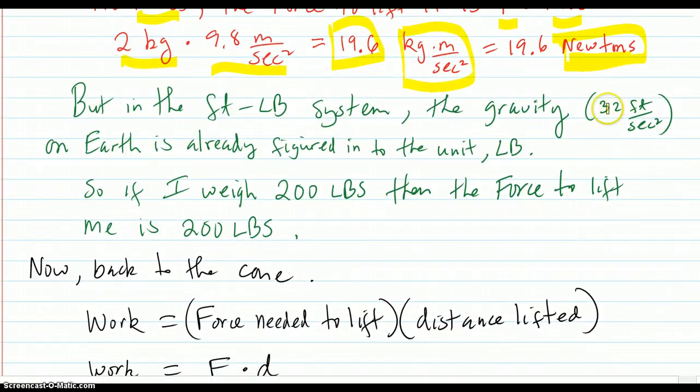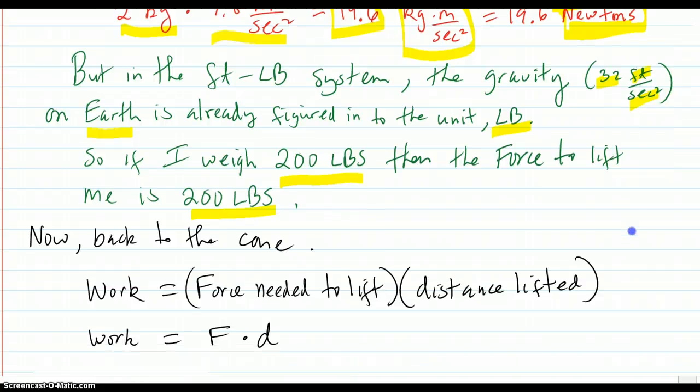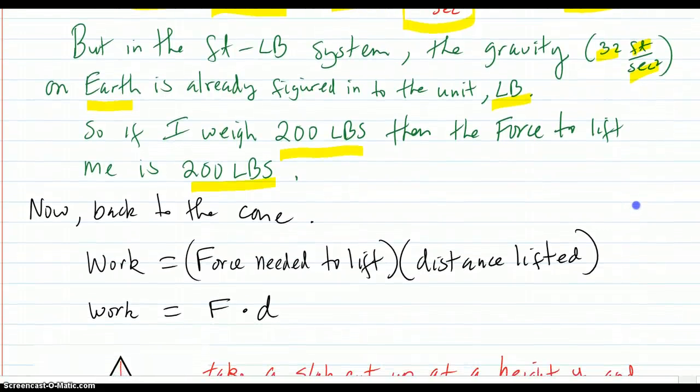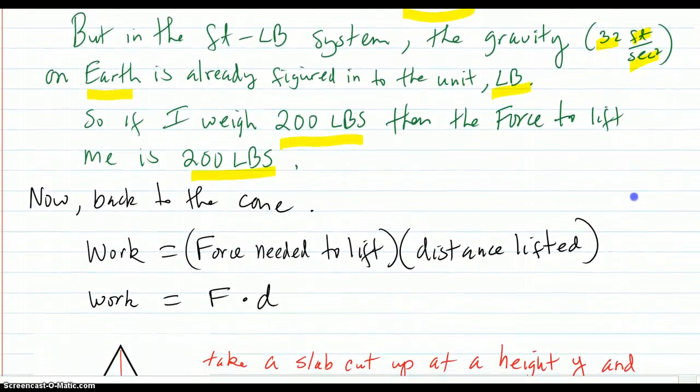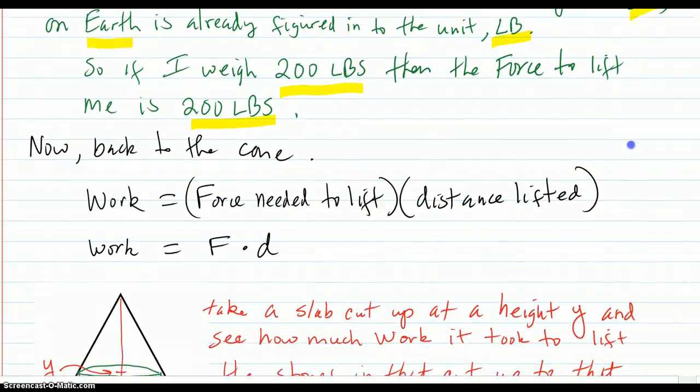Our gravity of 32 feet per second squared, good for on Earth, is figured into the pounds unit. It's inside of it. So if I weigh 200 pounds, then the force to lift me is 200 pounds. So the weight is the force in that case. So now back to the cone.